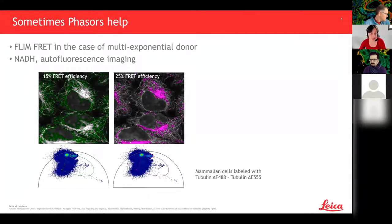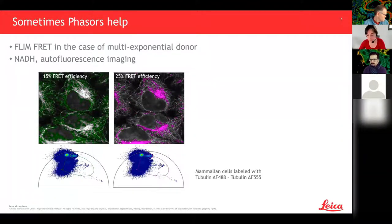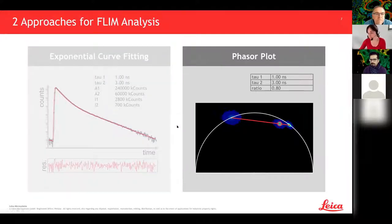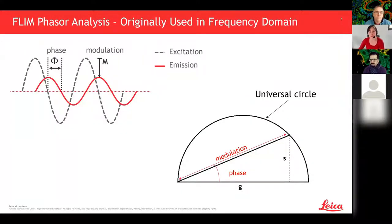Another application that benefits greatly from phasors is NADH in autofluorescence imaging — you've seen some applications of this in earlier talks. There are mostly two approaches to FLIM analysis: one is exponential curve fitting, which was covered in the workshop before this, and the other is the phasor plot, which is what we're going through today.